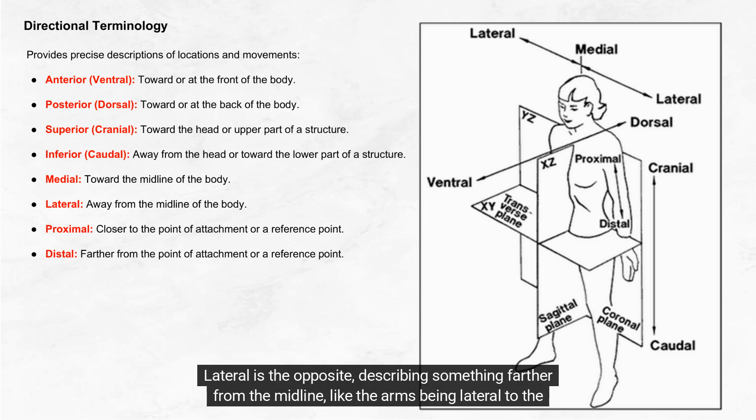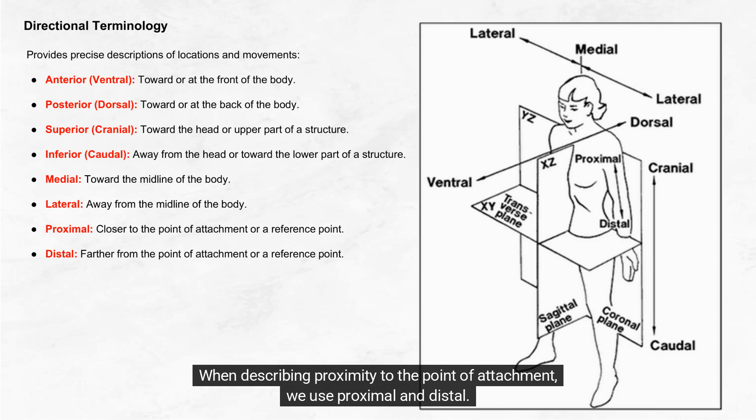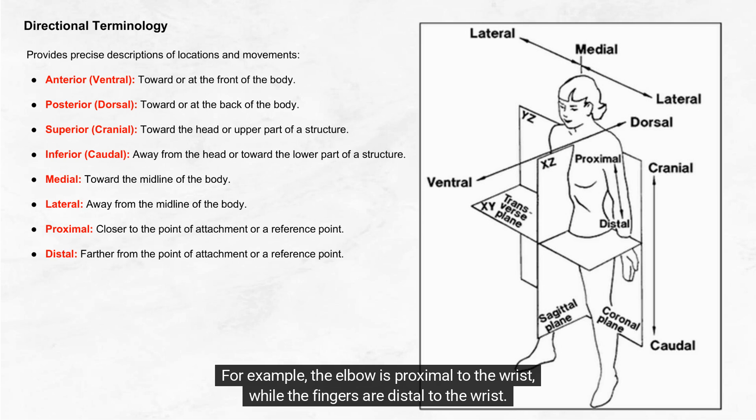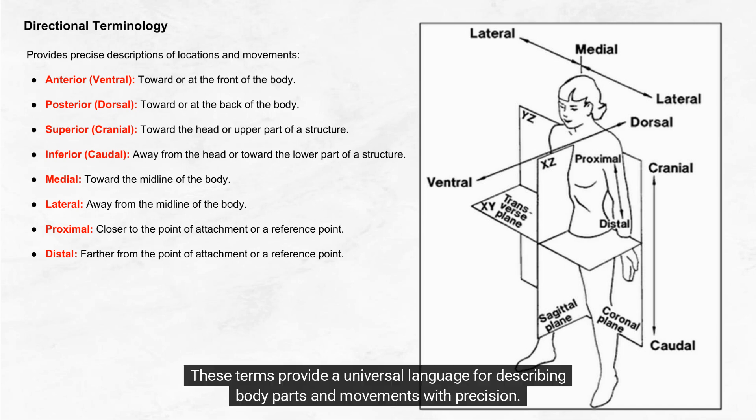Lateral is the opposite, describing something farther from the midline, like the arms being lateral to the chest. When describing proximity to the point of attachment, we use proximal and distal. For example, the elbow is proximal to the wrist, while the fingers are distal to the wrist. These terms provide a universal language for describing body parts and movements with precision.